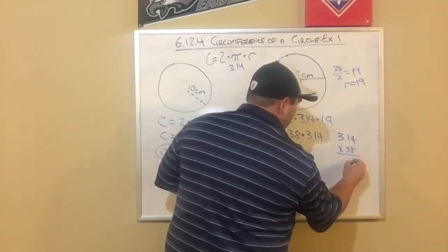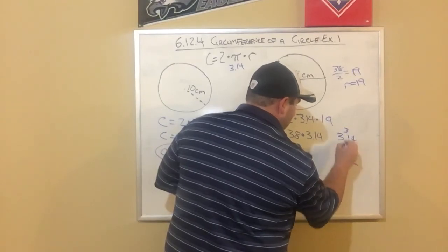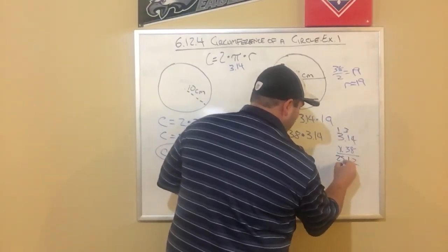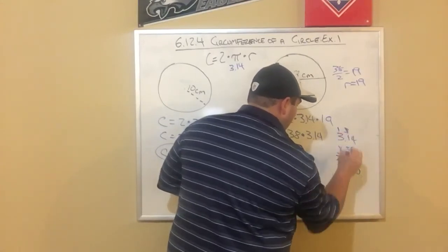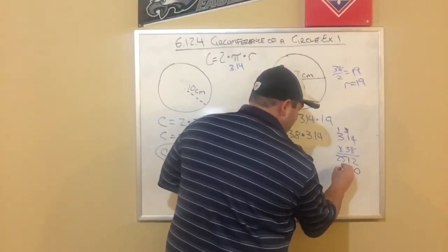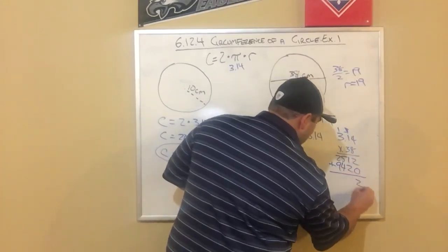8 times 4 is 32. Carry my 3. 8 times 1 is 8. Plus 3 is 11. Carry my 1. 8 times 3 is 24. Plus 1 is 25. Zero. 3 times 4 is 12. Carry my 1. 3 times 1 is 3. Plus 1 is 4. 3 times 3 is 9.